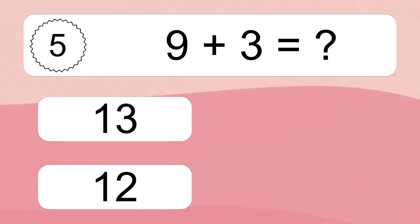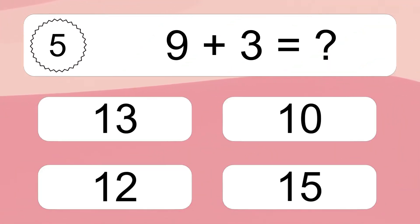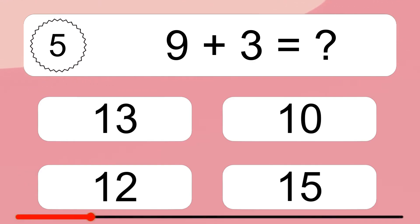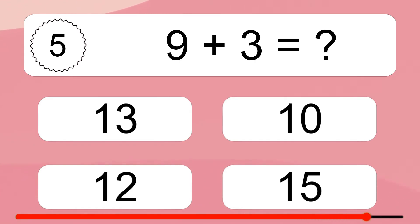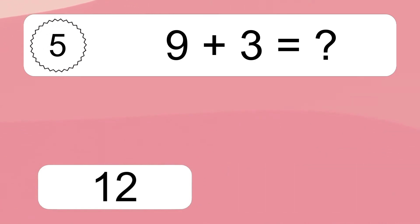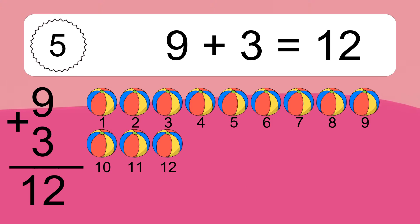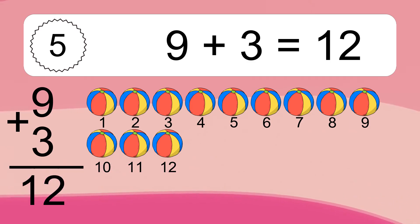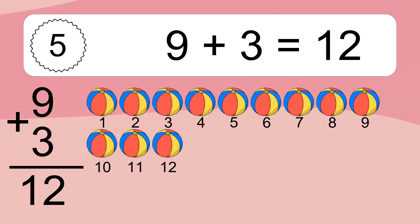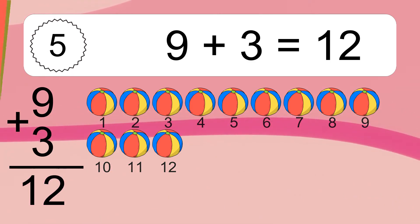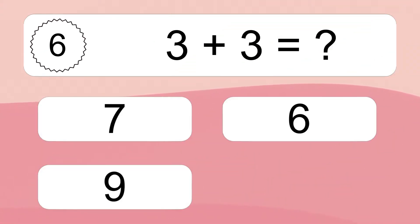9 plus 3 equals what? 9 plus 3 equals 12. Let's count it: 1, 2, 3, 4, 5, 6, 7, 8, 9, 10, 11, 12.